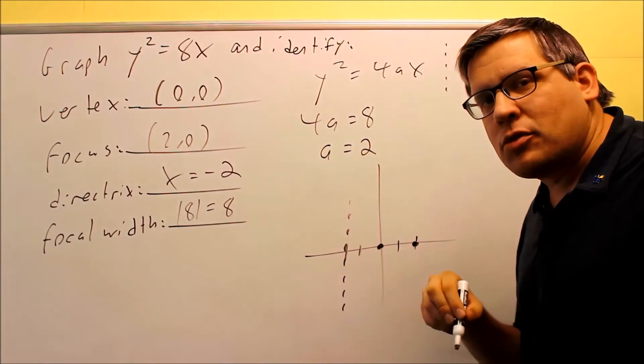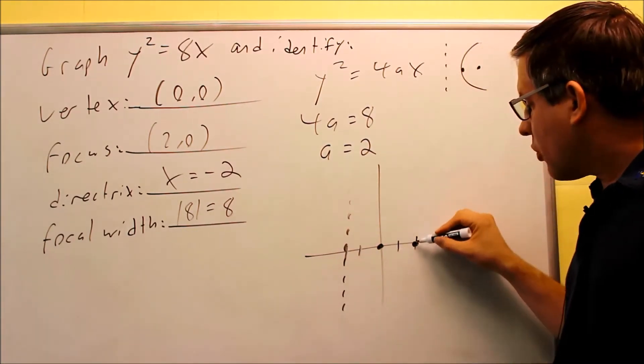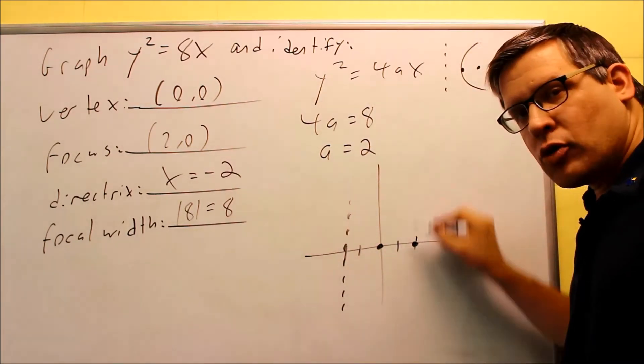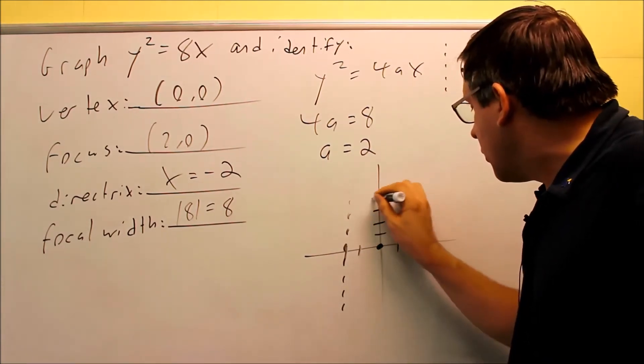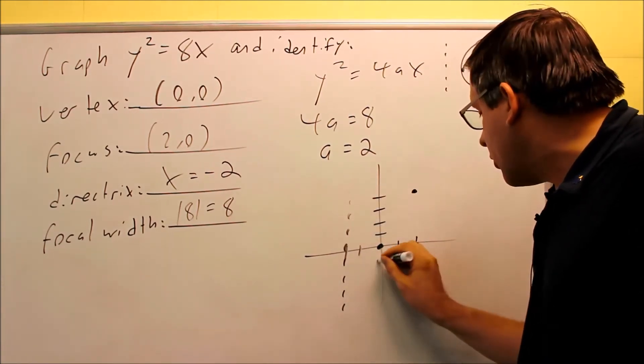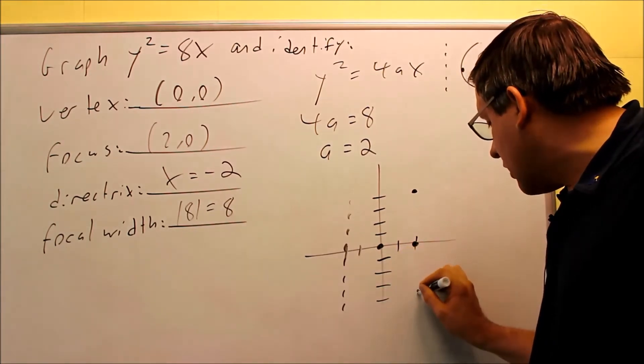If we take that value of 8 and split it up, divide by 2, that means that we're going to go up 4 and down 4, so that way the whole width is going to be 8. So from here, we're going to go up 4. We're going to go up 4, make a dot. We're going to go down 4, make a dot down here.